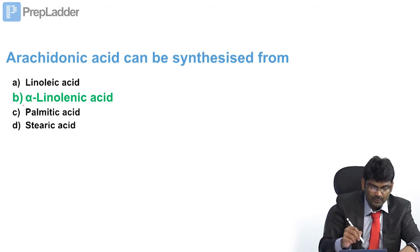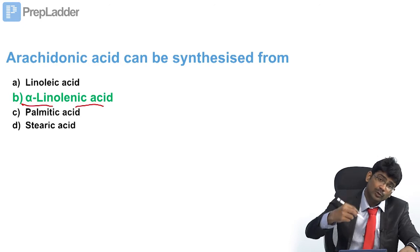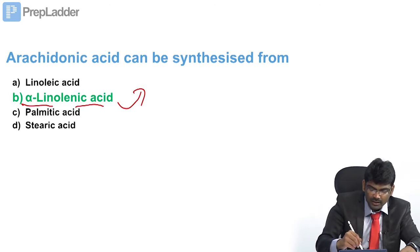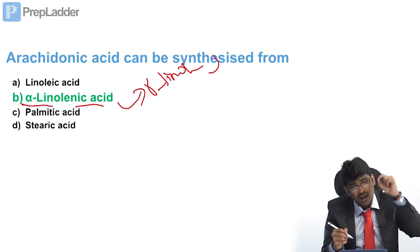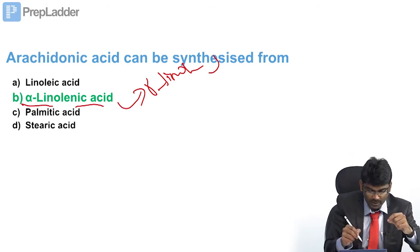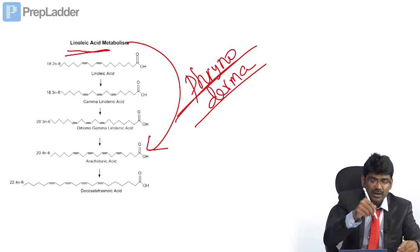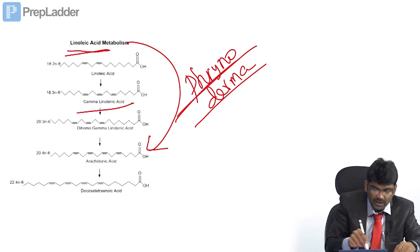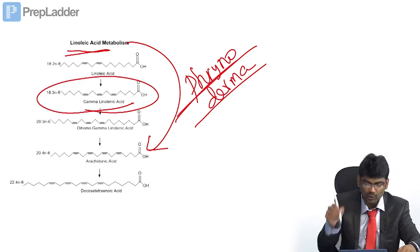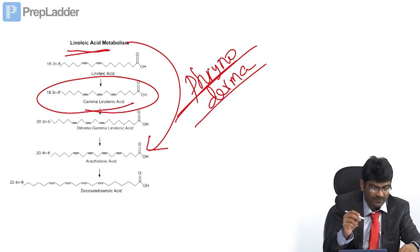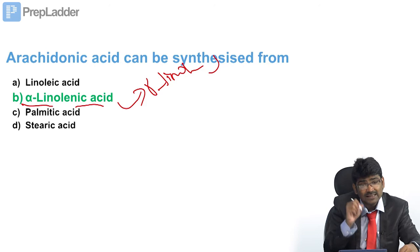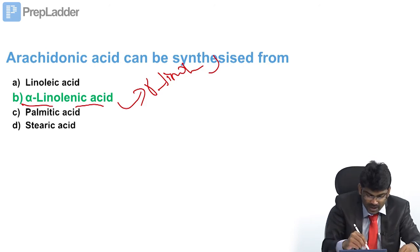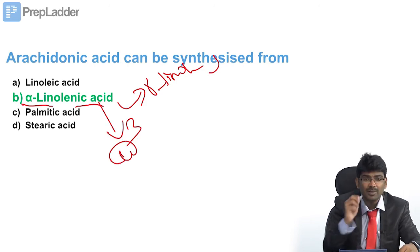During the synthesis of arachidonic acid from alpha-linolenic acid, gamma-linolenic acid is produced as an intermediate. Arachidonic acid is synthesized from linoleic acid. During that synthesis pathway, gamma-linolenic acid also appears, but it is not an omega-3 fatty acid. Alpha-linolenic acid is an omega-3 fatty acid — remember this.